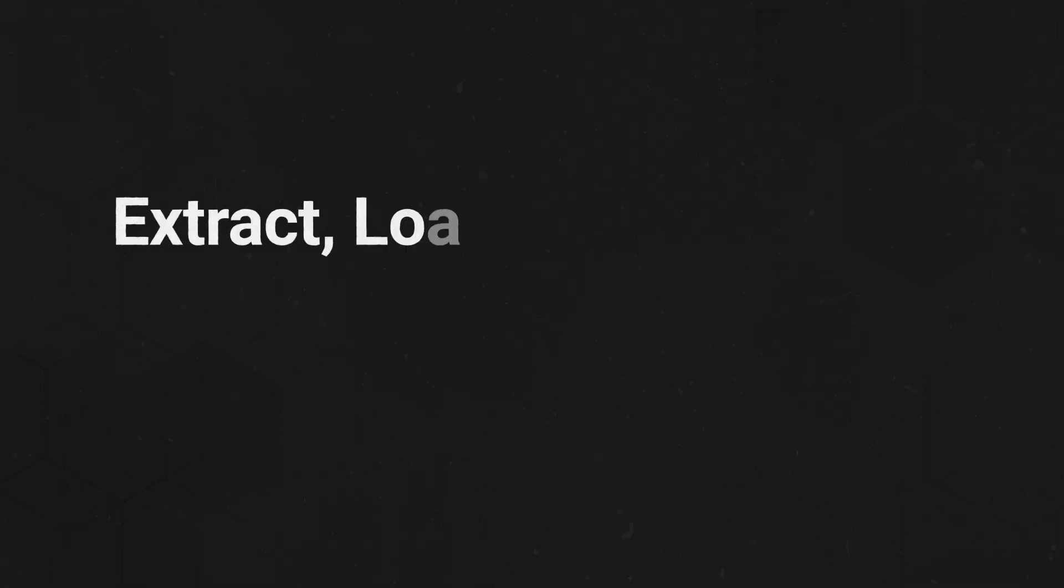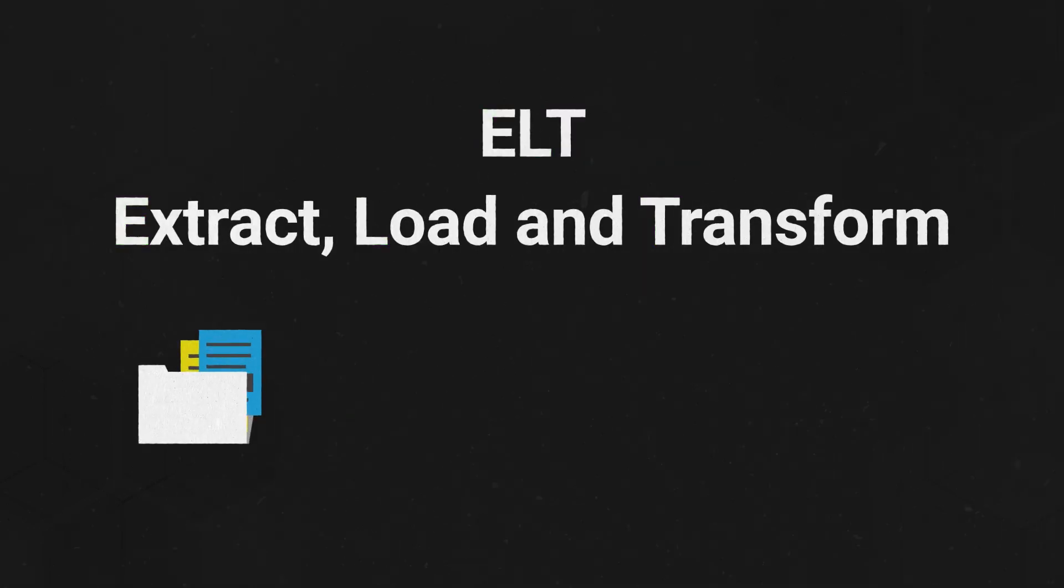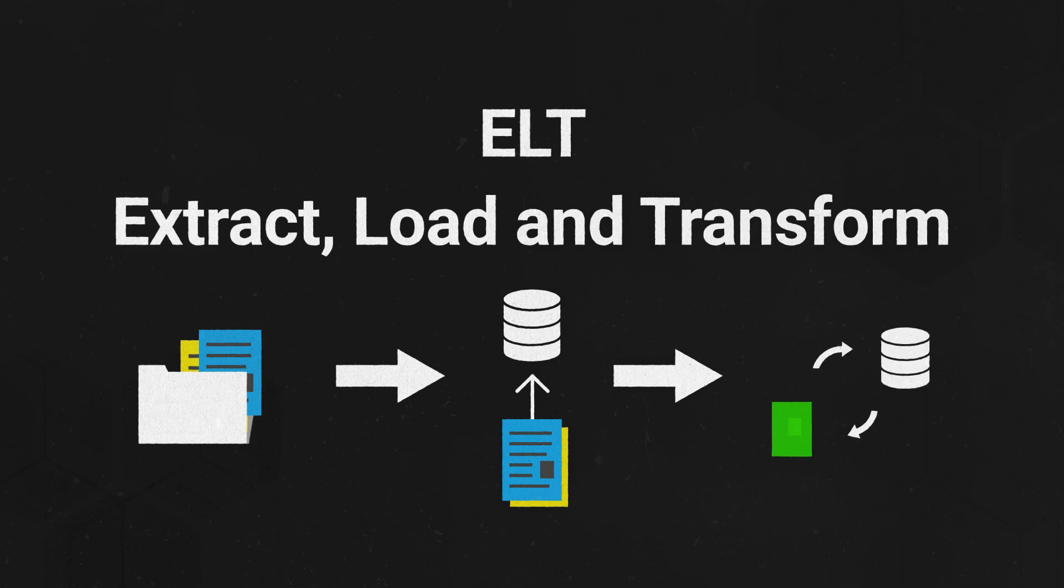The data transformation process is also known as extract, load, and transform, or ELT. Extraction refers to the collection of raw data from various sources. Then, it's combined and loaded into a data repository where it can be processed. Finally, the data is transformed from its source format to the format required for analysis.